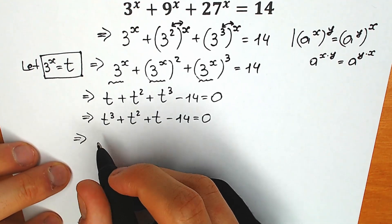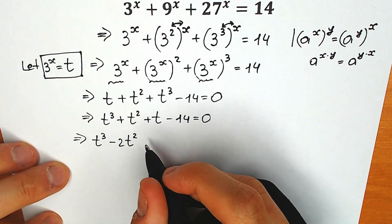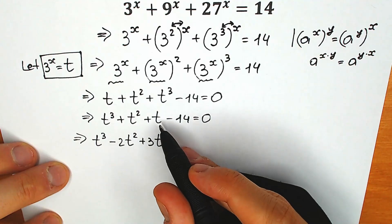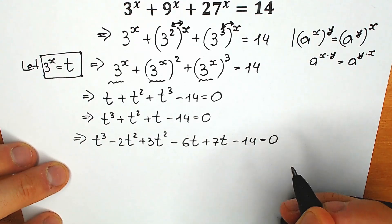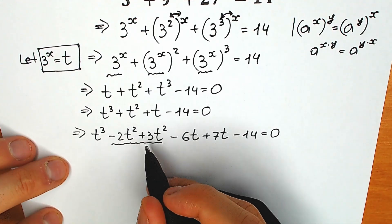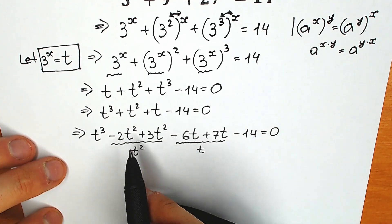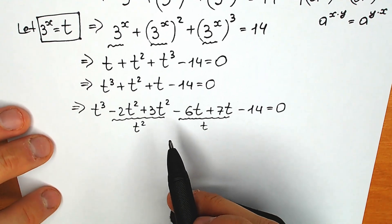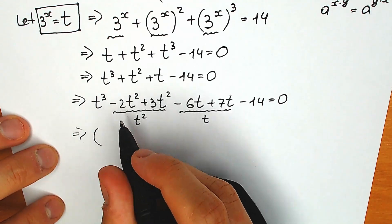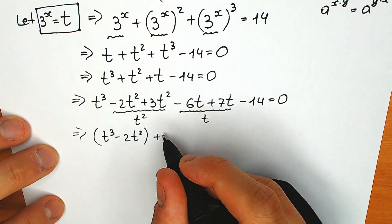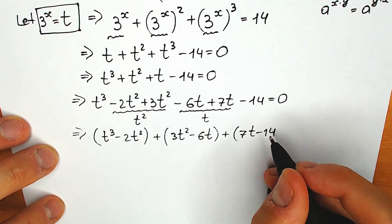I want to do a really great trick. We have t cubed; instead of t squared I write minus 2t squared plus 3t squared; and instead of t I write minus 6t plus 7t; minus 14 equals zero. So minus 2t squared plus 3t squared equals t squared, and minus 6t plus 7t equals t — the same expression as before, but rearranged. Now let's group: (t cubed minus 2t squared) plus (3t squared minus 6t) plus (7t minus 14) equals zero.